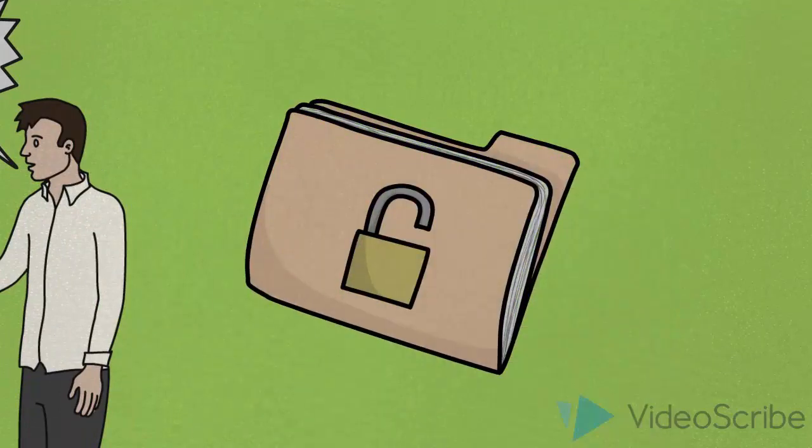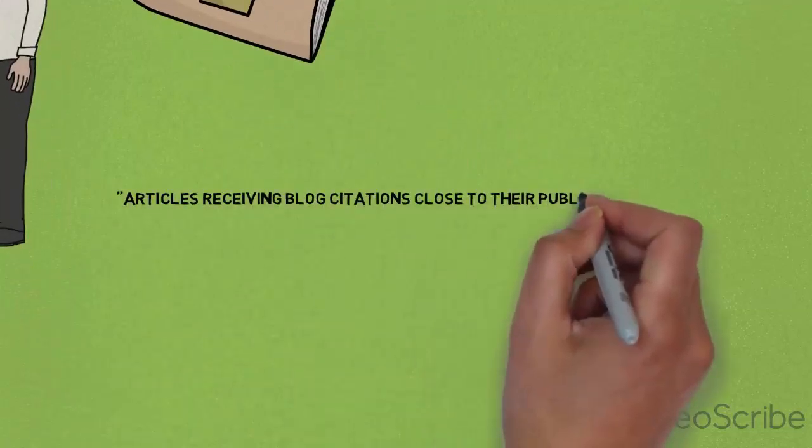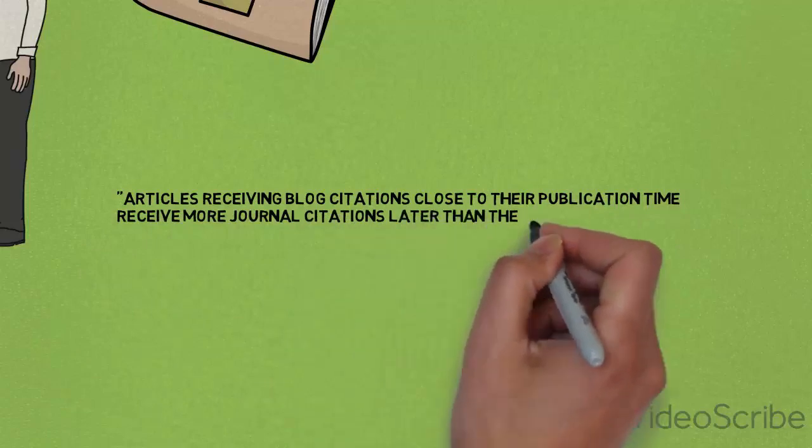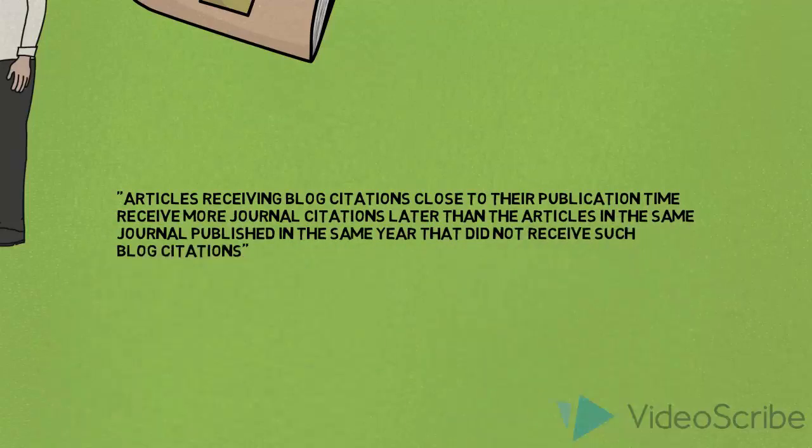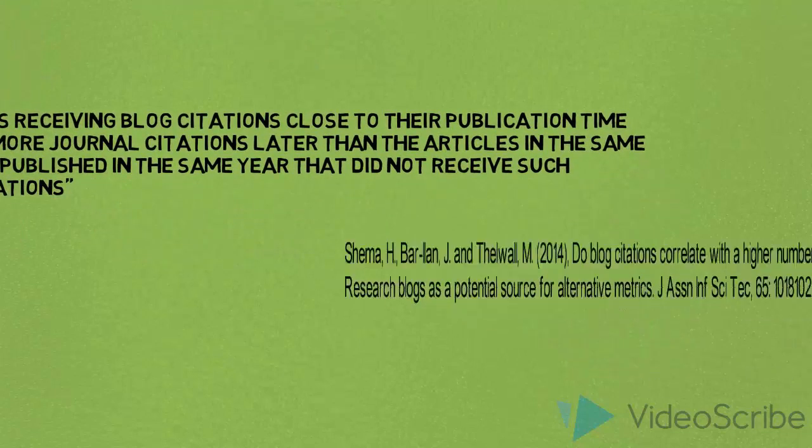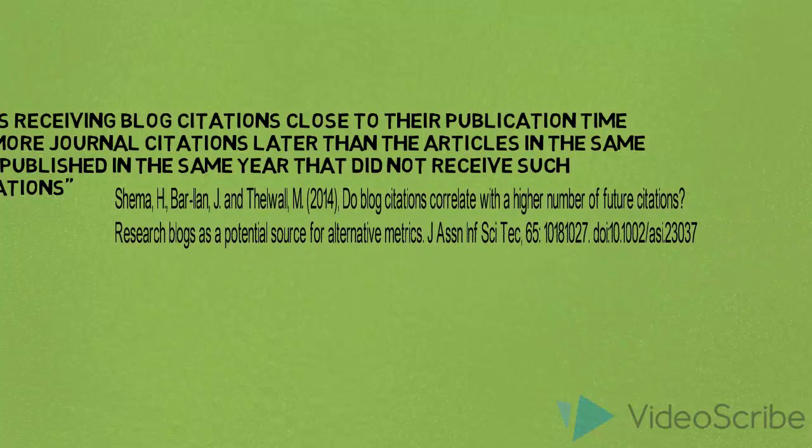As to any evidence of the merits of blogging on citations, a paper published in the Journal of the Association of Information Science and Technology looked at whether blog citations correlated to a higher number of future citations. They found that authors receiving blog citations close to their publication time received more journal citations later than the articles in the same journal published in the same year that did not receive such blog citations.